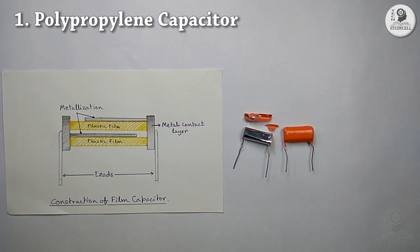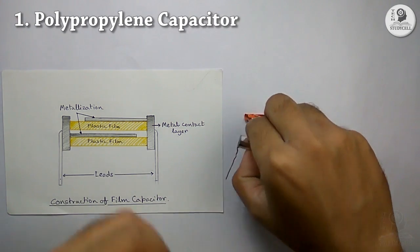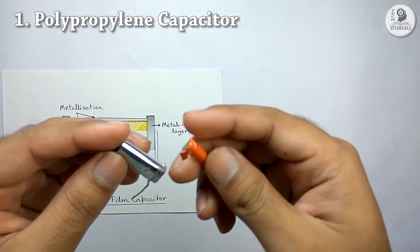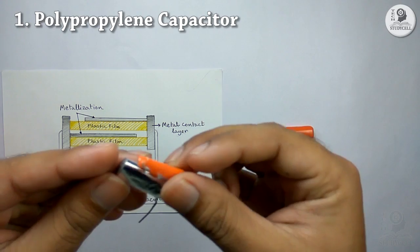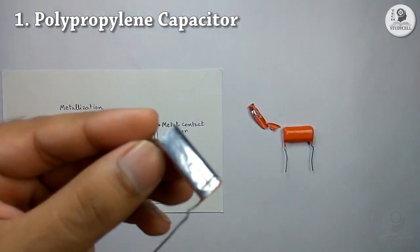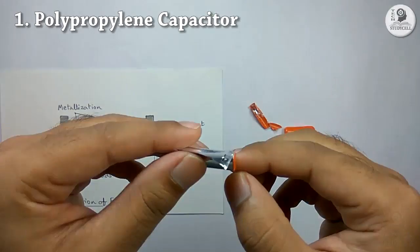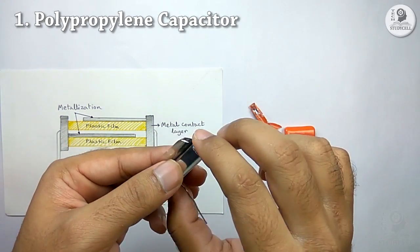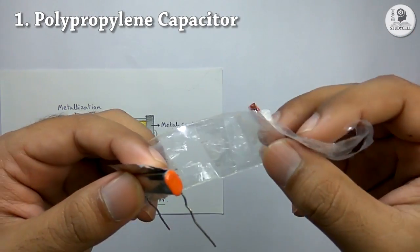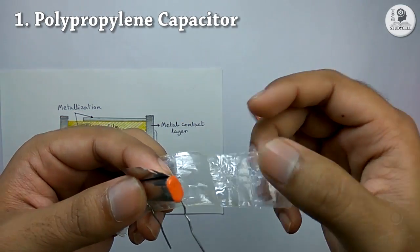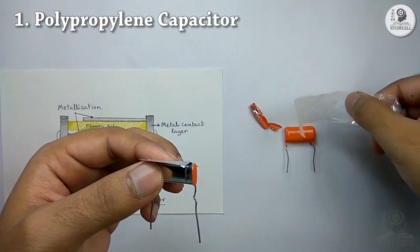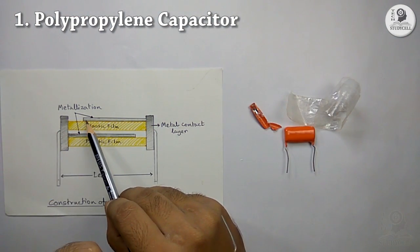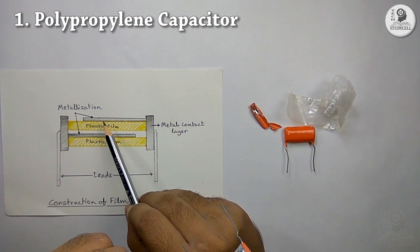Now we will see the construction of a polypropylene capacitor, which is a film-type non-polarized capacitor. If we look at this capacitor, you will find a protective layer on the top. If we remove this protective layer, you will find the two plates and a dielectric in between. This is called a polypropylene film capacitor because the dielectric is made of polypropylene film. This material is used as the dielectric of this capacitor.